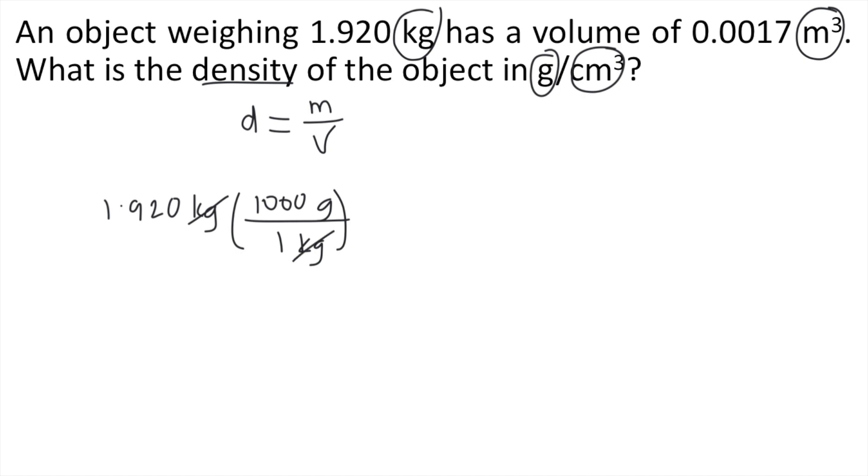Kilograms cancel out. So 1.920 times 1,000 equals 1,920 grams.